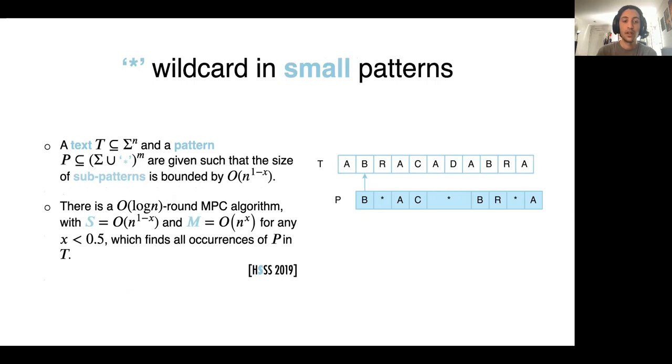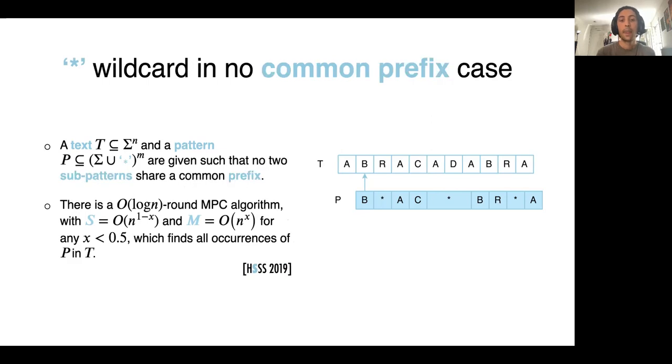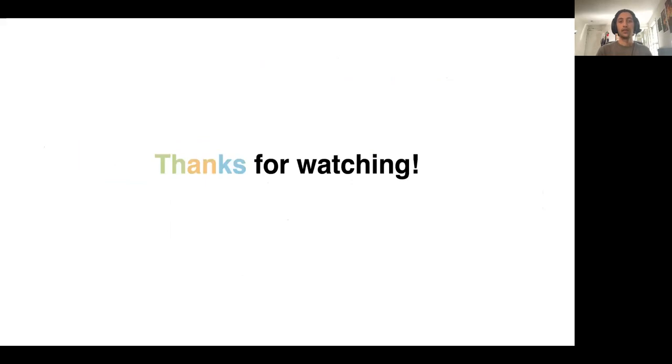The first one is that if we separate the pattern from the star characters, we end up with a bunch of sub-patterns. If the size of every sub-pattern is bounded by n^(1-ε), then we can solve the problem in log n rounds with ε smaller than 1/2. The other special case that we can solve is when no two sub-patterns are prefixes of each other. In this case, we also solve the problem in log n rounds of MPC. Thanks for watching.